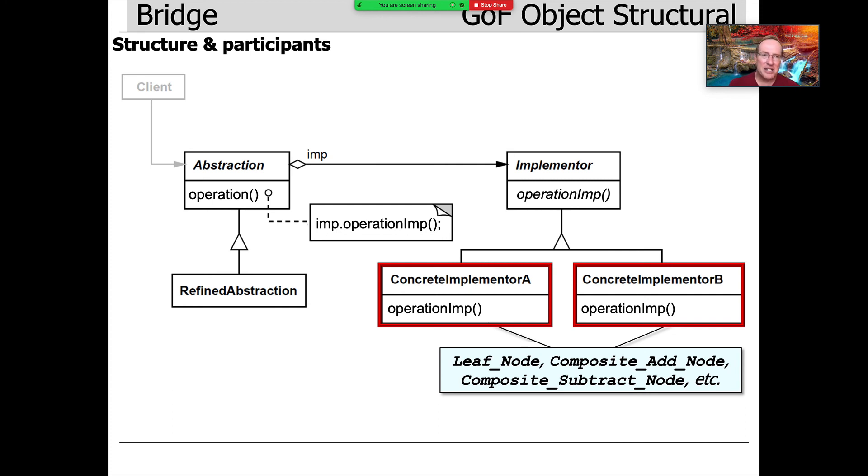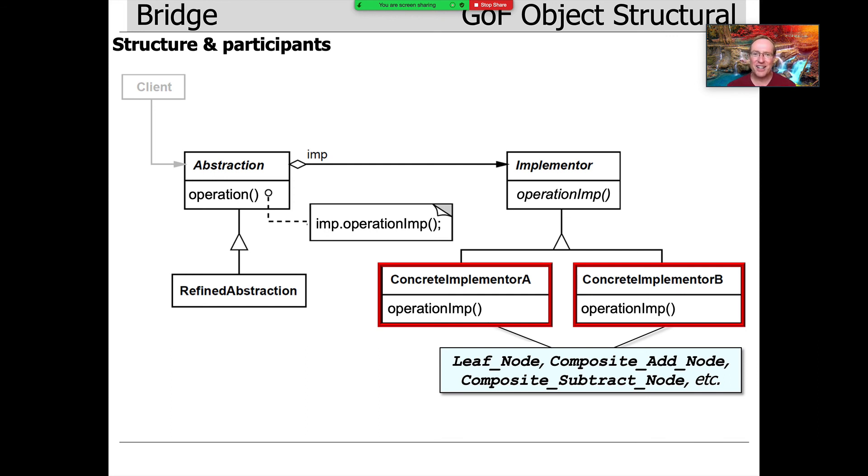We then have some concrete implementer classes which refine the implementer super class. These would be leaf node, composite add node, composite subtract node, and so on in our expression tree case study. And then we also have this thing called the refined abstraction, which could be things like a synchronized expression tree or an instrumented expression tree and so on and so forth.